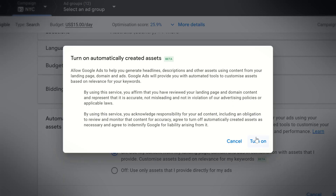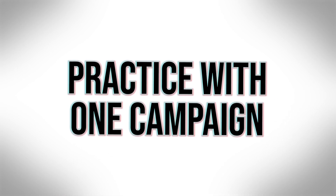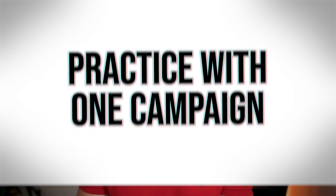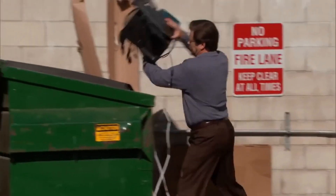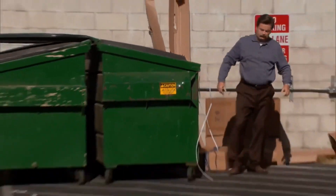When you do decide to turn it on, I'd probably start with just one campaign. Assuming you're running multiple campaigns, as most Google advertisers are, you might want to just practice with one campaign, see how it performs, see how you like it — is it coming up with options that are actually good for your ads and make sense, or not? In which case you might want to turn it off. Remember, like all features, this is going to perform better for some advertisers than others, depending on what they advertise and how much data Google has on their industry.